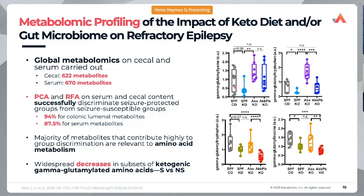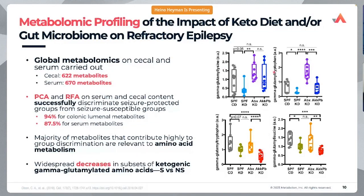Looking at specific gamma-glutamyl amino acids, very nice patterns emerge between the ketogenic diet only group and the ketogenic diet with supplementation of these two bacterial species. There was no reduction in these levels in models treated with antibiotics. Both of these patterns are clear in the cecal content as well as in the serum samples, where we see a very nice downward trend in both diet only and diet with probiotics.